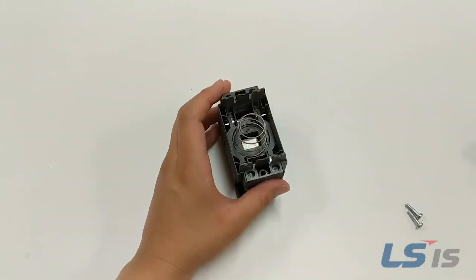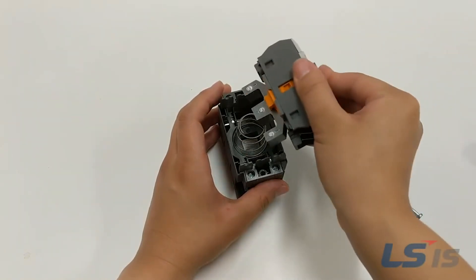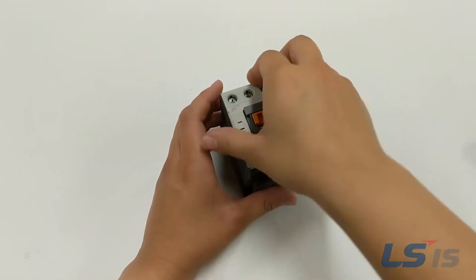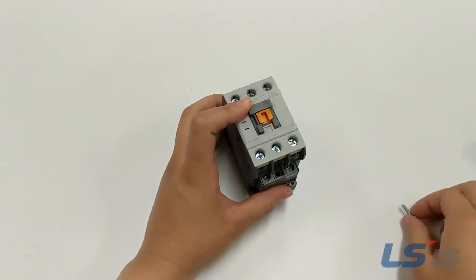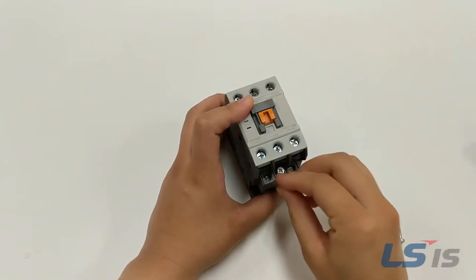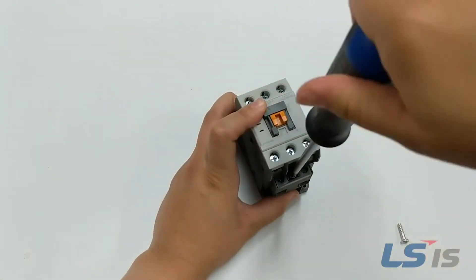Place the top half onto the bottom half. If the top half does not slide in, rotate the top 180 degrees and try again. Secure the contactor with the screws between A1 and A2 and replace any auxiliaries.